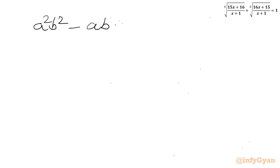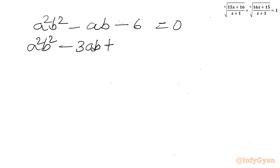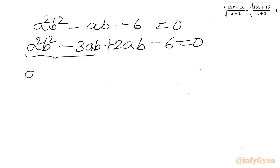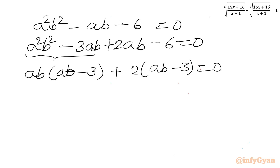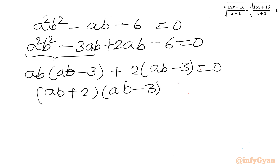Factoring the quadratic a²b² − ab − 6 = 0: I write it as (ab − 3)(ab + 2) = 0. Therefore ab = 3 or ab = −2. We now have two systems to solve, each paired with a + b = 1.